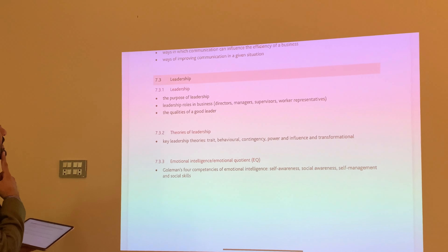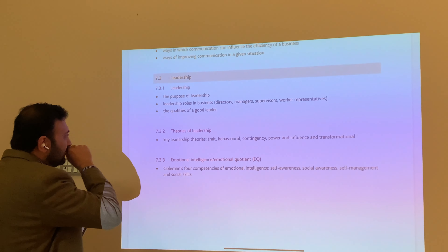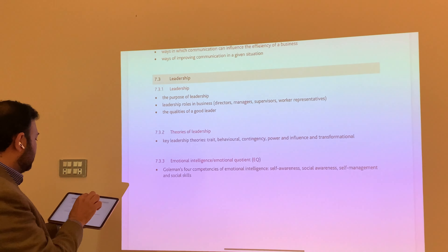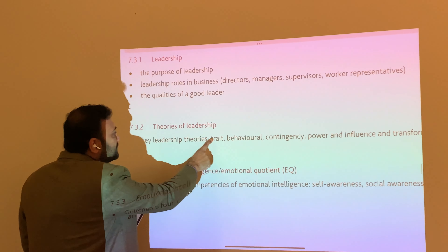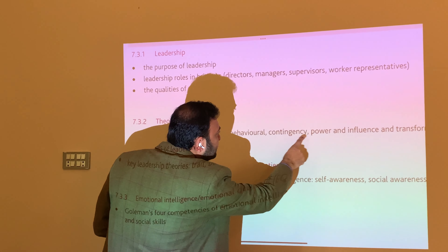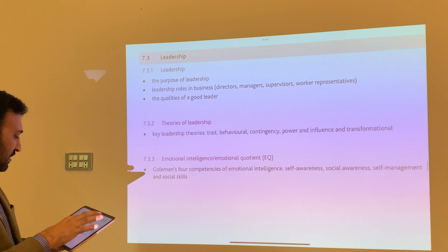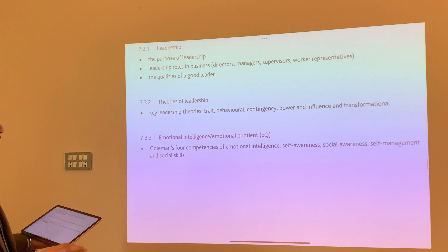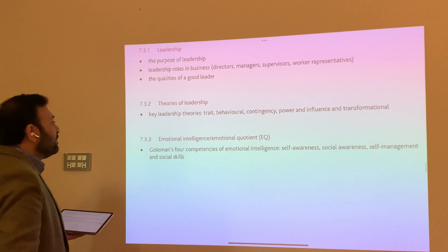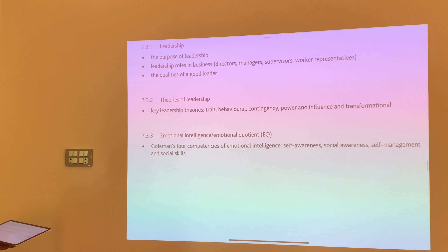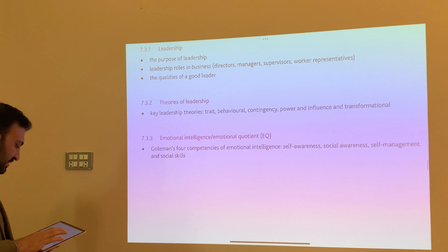Regarding leadership — leadership has been moved from A1, but something has been added to the A2 syllabus now: theories of leadership. Key leadership theories include trait, behavioral, contingency, power, influences, and transformational — we should teach them now. Emotional intelligence, which was already part of emotional quotient, we should teach it now in A2, covering emotional competencies: self-awareness, self-control, and all that.